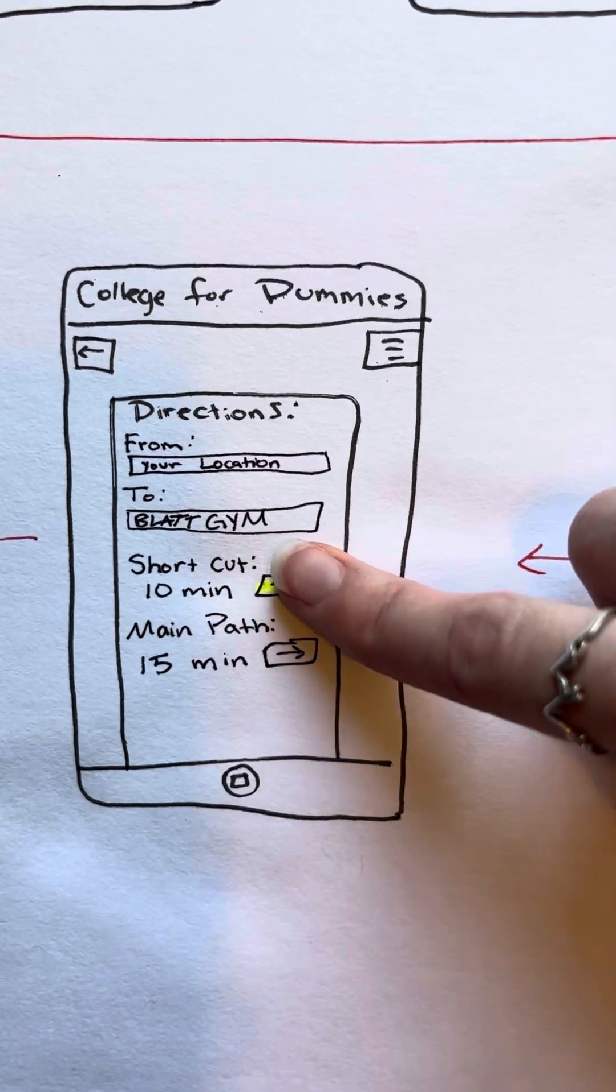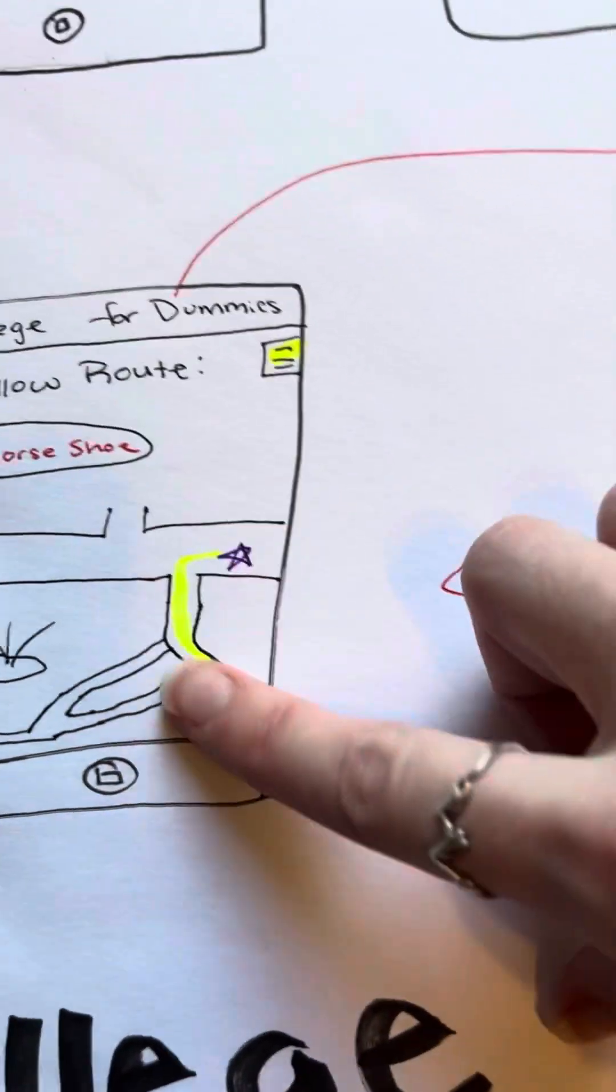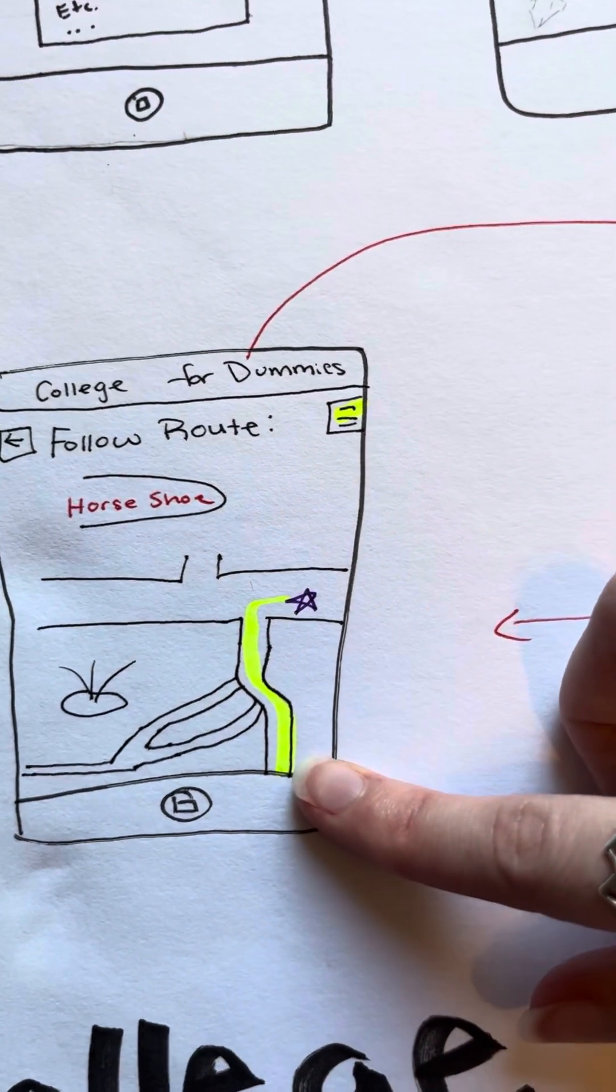But we're going to choose shortcut because it's five minutes faster. And then you just follow the route to where you need to go. It makes it easier.